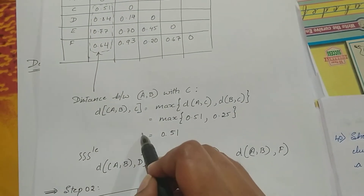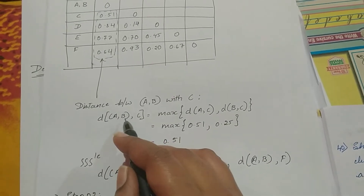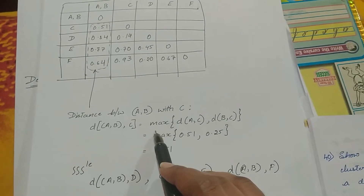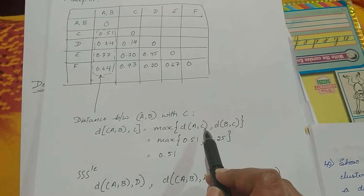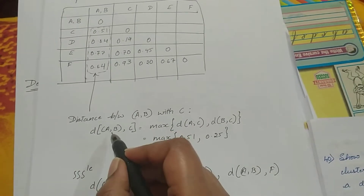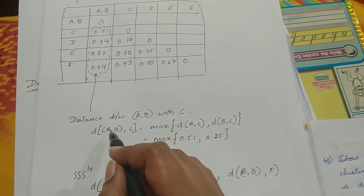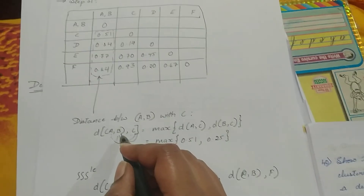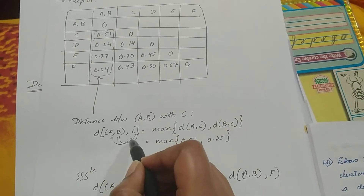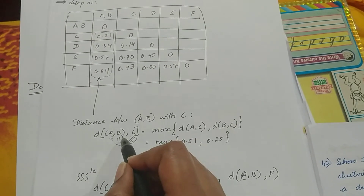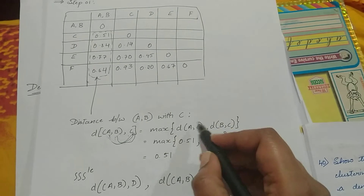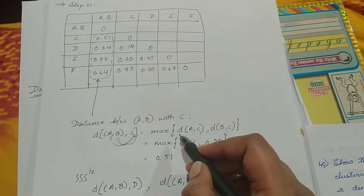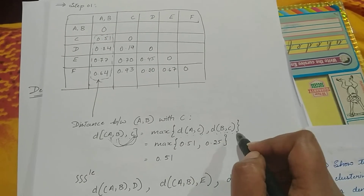This distance is calculated by a formula: to find the AB cluster distance with respect to C, we take the maximum of the distance from A to C and the distance from B to C. In complete link, we take the maximum distance — so if A-to-C is larger than B-to-C, we use A-to-C as the distance of cluster AB with respect to C.